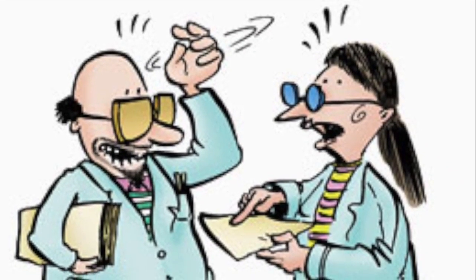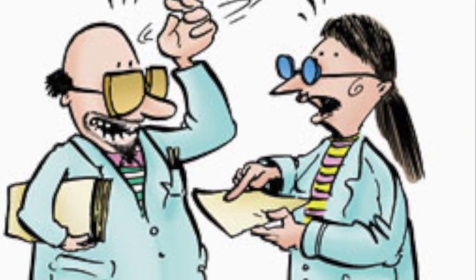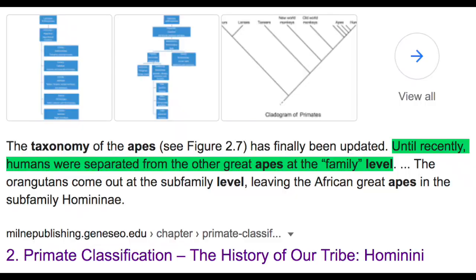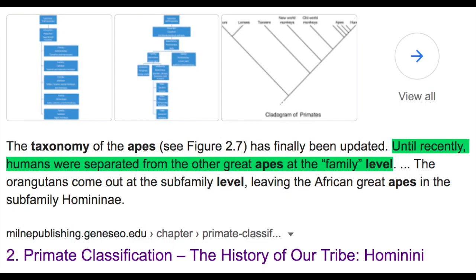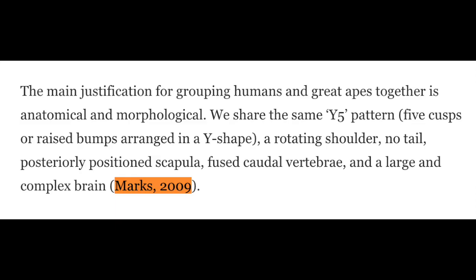Evolutionists are always trying to make sure everything is related and wanted to classify man as an ape. So they came up with a way to linguistically smuggle mankind into the ape family. A scientist clipped together five physical features that humans share in common with apes to swindle man into that family. Basically, they played a language game.